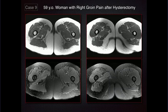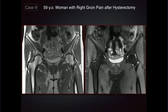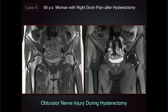A subtle case: axial T1 and axial T2 showing a difference in bulk of the adductor musculature on the right compared to the left, and some mild hyperintensity on the right. That's denervation change in the adductor group, which is supplied by the obturator nerve. This patient had had a hysterectomy done. That nerve comes right through the obturator foramen to supply the adductor musculature, and it's easily potentially injured in a hysterectomy.